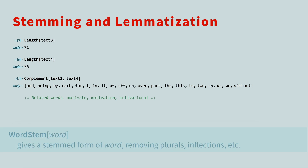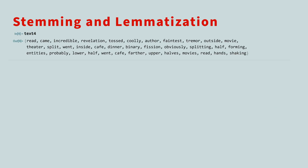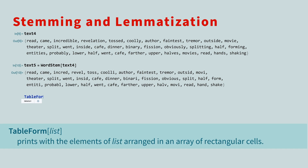For example, consider the three related words: motivate, motivation, and motivational. If all three words were used in a piece of text, they would be treated as separate words. But conceptually, they are highly related. So through a technique called stemming, you can remove common prefixes and suffixes to get a more common kernel. With Mathematica, we can do this with the WordStem function. If we use this function on these three related words, the result is the same word fragment.